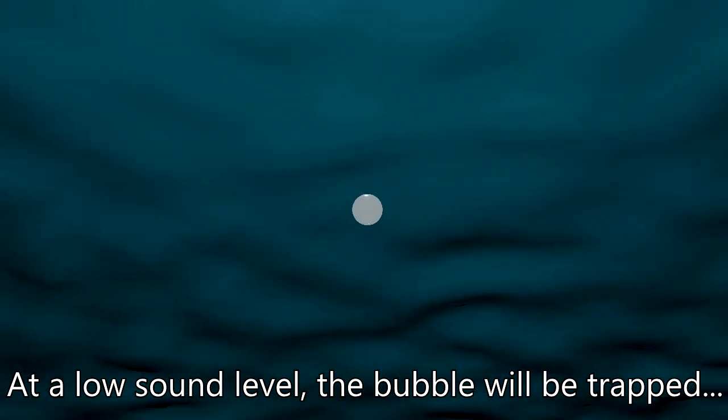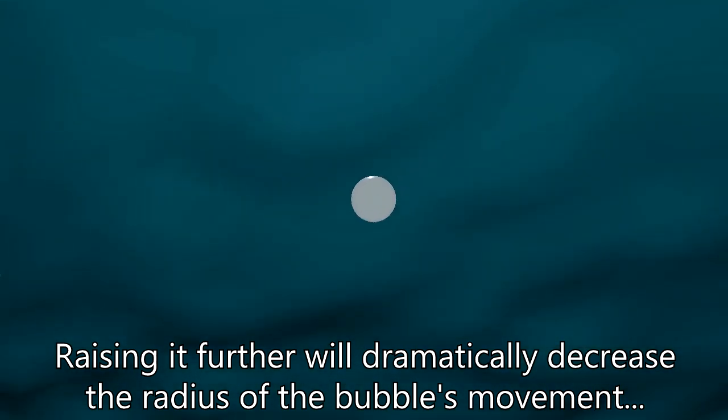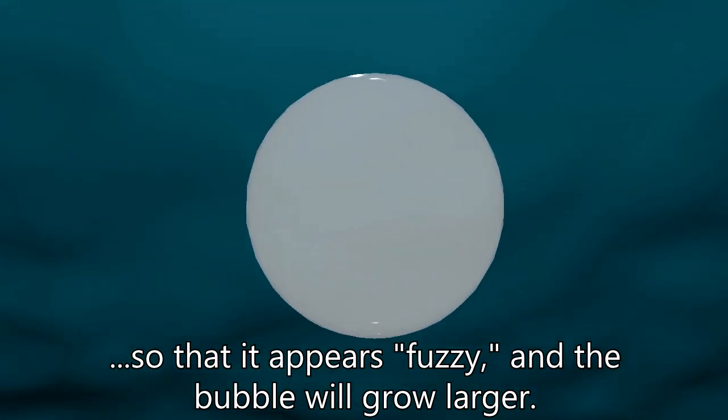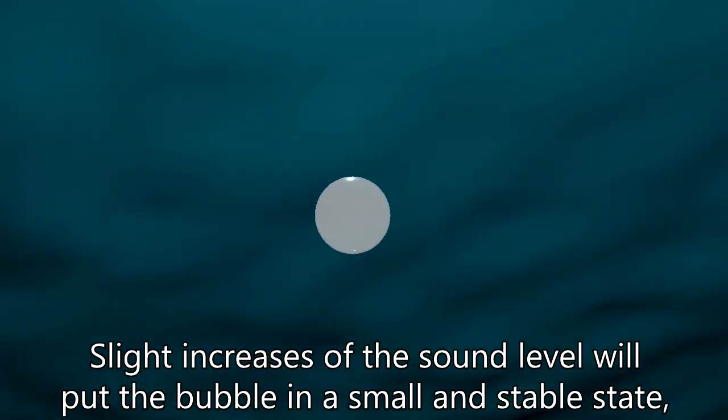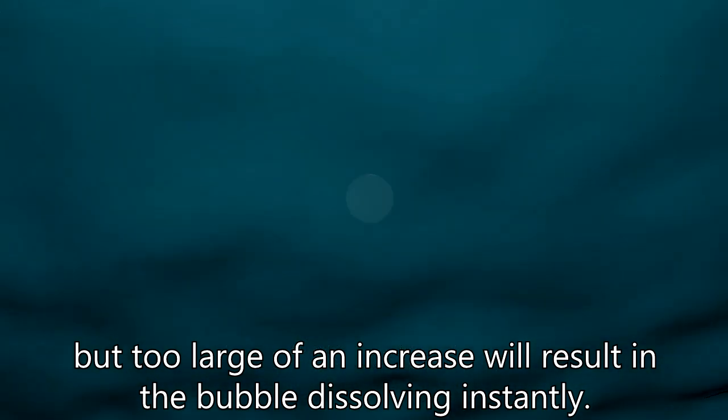At a low sound level, the bubble will be trapped, and as the level rises, the bubble will begin to jitter and move sporadically. Raising it further will dramatically decrease the radius of the bubble's movement so it appears fuzzy and the bubble will grow larger. Slight increases of the sound level will put the bubble in a small and stable state, but too large of an increase will result in the bubble dissolving instantly.